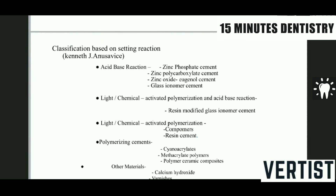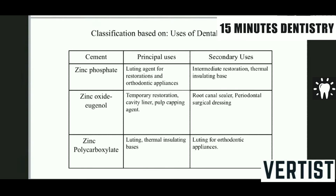There is one more classification based on use — principal use and secondary use. For example, zinc phosphate cement is primarily used for luting, restoration, and orthodontic appliances; secondarily, it can be used as an intermediate restorative or thermal insulating base — not as a true permanent restorative material, but as a temporary or intermediate restoration before going for a permanent one. Many students make mistakes about primary versus secondary use in viva examinations.